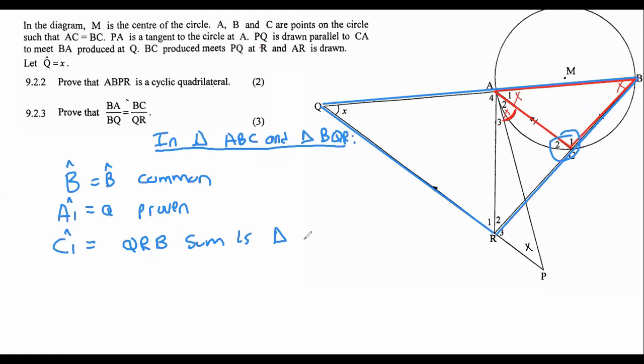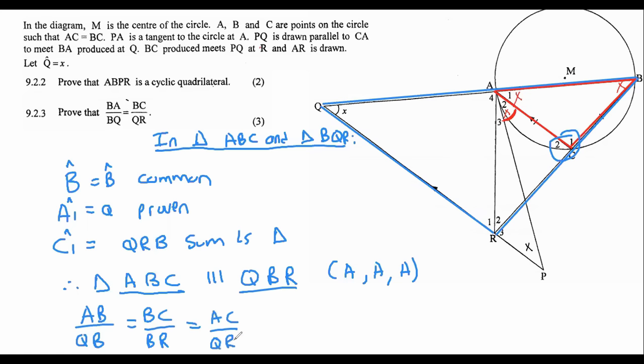Okay, so now we have three things, three angles that are the same in both triangles. So now we can say therefore triangle A, B, C is similar. Now get the order right for the next one. So if you're using A, B, C, then that goes with Q, B, R. And the reason for this is angle, angle, angle. Right. Now remember, whenever you write out two triangles being similar, you should always use your ratios. Remember those? The ones that go AB over QB equals to BC over BR which is equal to AC over QR. And the reason for that is you can just say similar triangles.